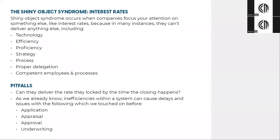Let's talk about the shiny object syndrome, which I had mentioned earlier regarding interest rates. What does this term mean and how does it relate to your mortgage? Shiny object syndrome occurs when companies neglect what's really important because they're focusing your attention on something else. If they can focus your attention on the shiny object — the supposed fantastic rate — they no longer have to worry about other dull considerations.